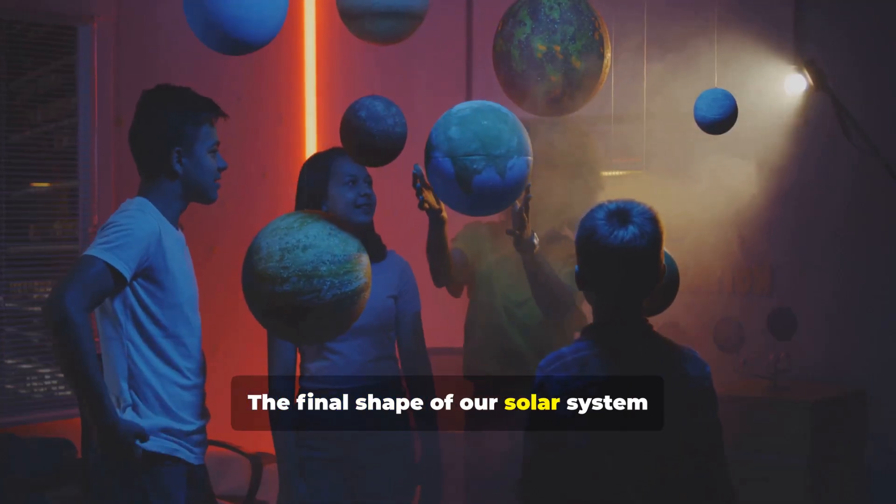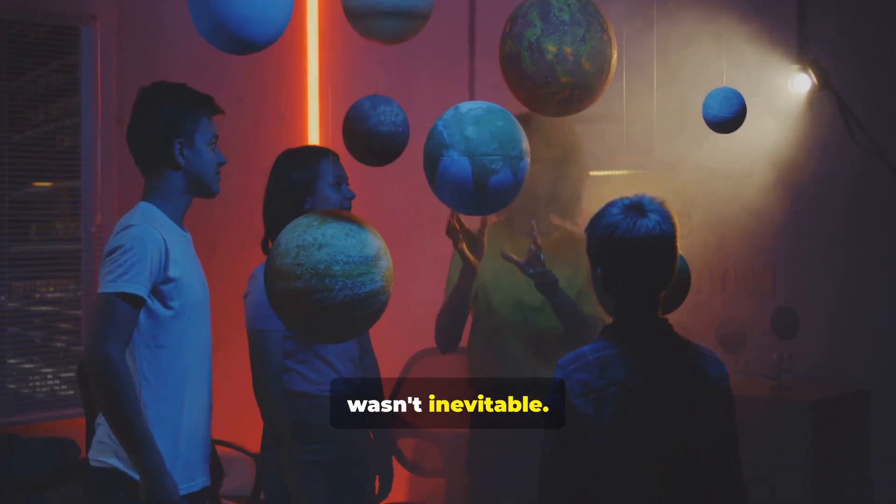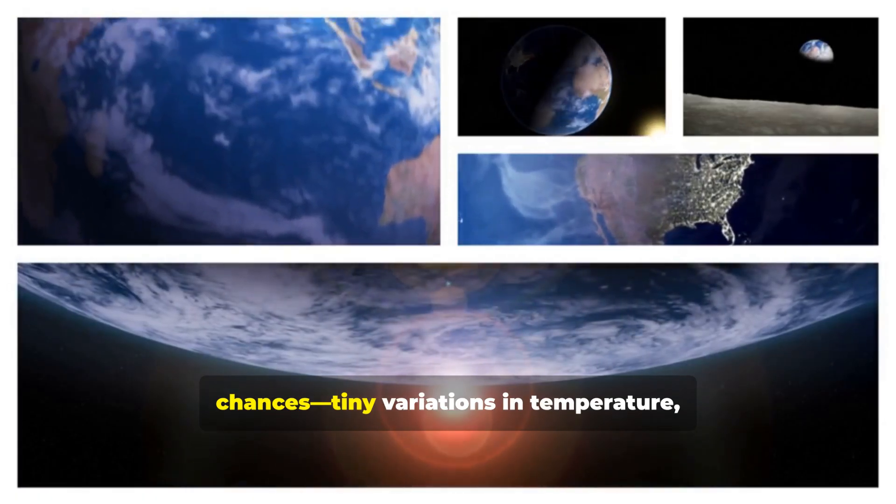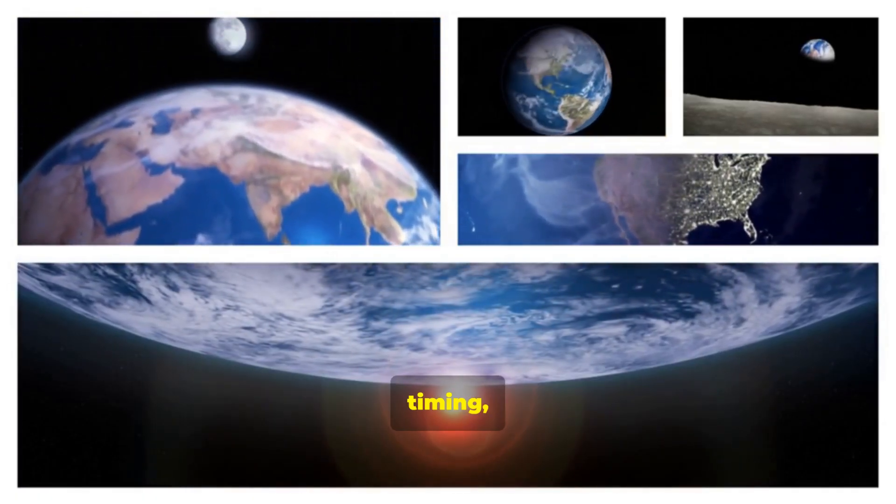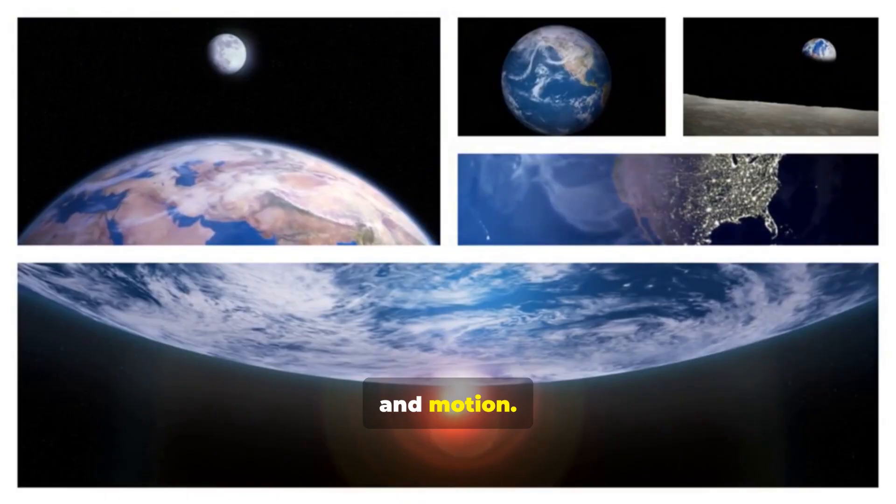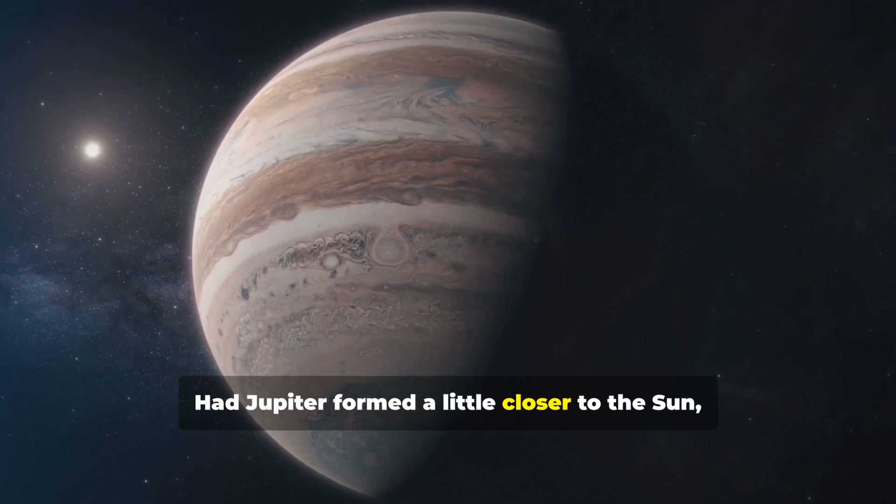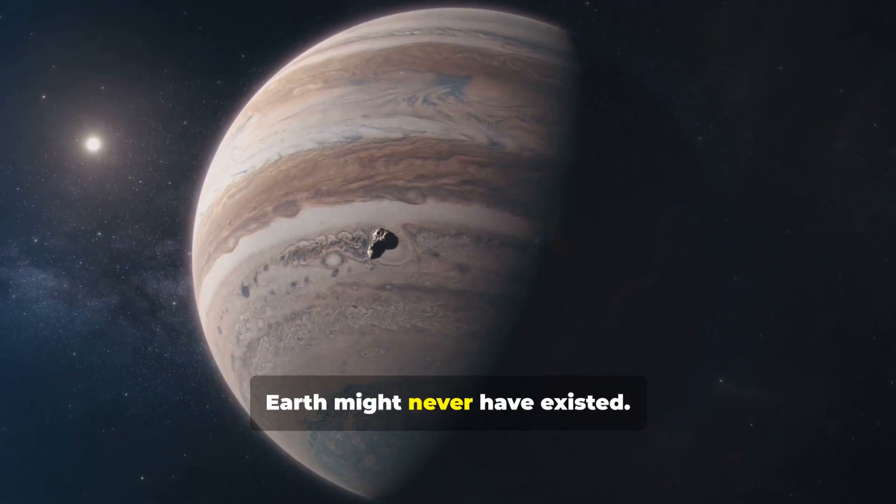The final shape of our solar system wasn't inevitable. It was the result of countless chances, tiny variations in temperature, timing, and motion. Had Jupiter formed a little closer to the sun, Earth might never have existed.